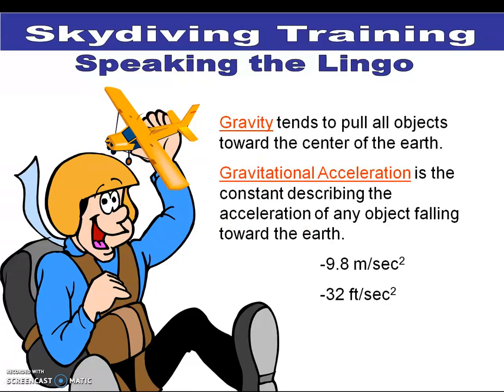Gravity tends to pull all objects to the center of the earth. The gravitational acceleration is always constant, no matter what object it is. On earth, it's always pointing down — hence the negative sign — and it's always 9.8 meters per second squared in the metric system, or 32 feet per second squared in the English standard system.